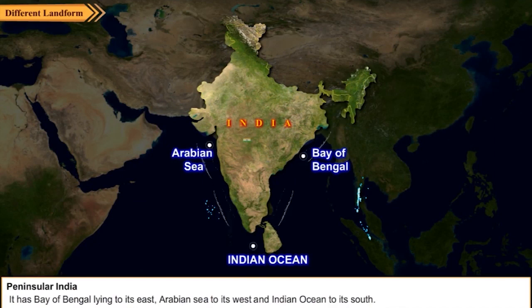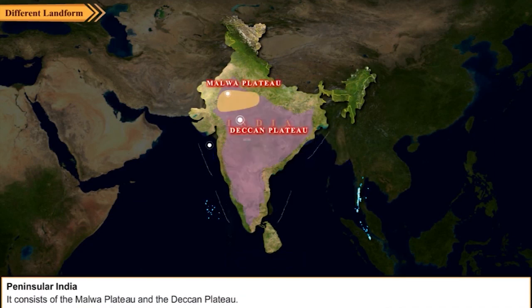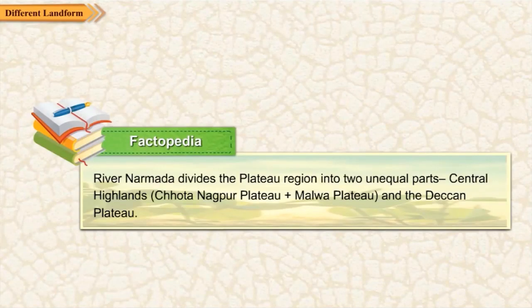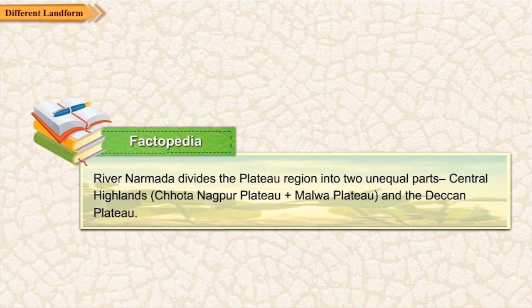The Indian Ocean lies to its south. It consists of the Malwa Plateau and the Deccan Plateau. A plateau, also called tableland, is a flat area raised from the surrounding areas. According to Factopedia, the river Narmada divides the plateau region into two unequal parts: the Central Highlands, which includes the Chota Nagpur Plateau and the Malwa Plateau, and the Deccan Plateau.